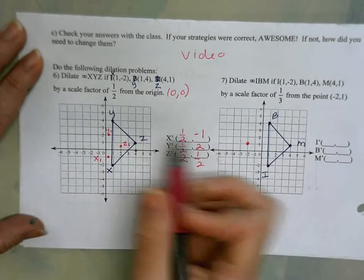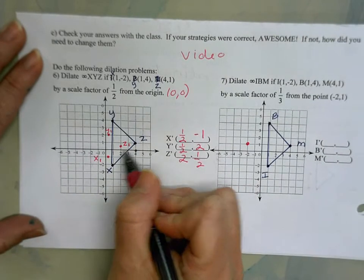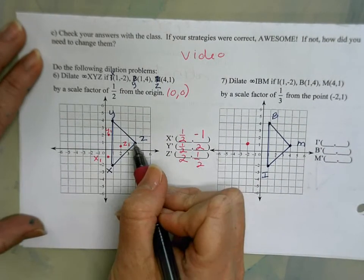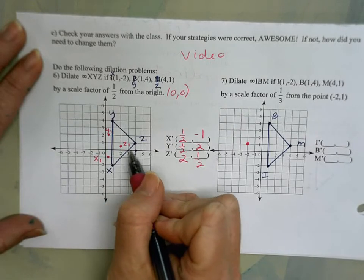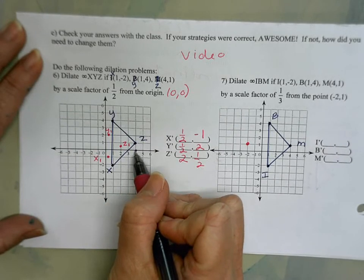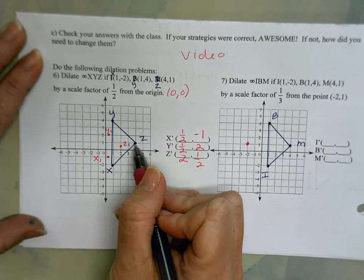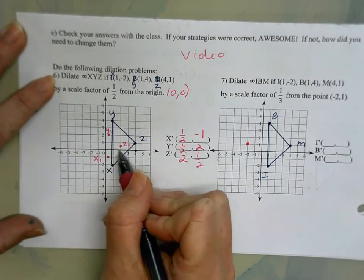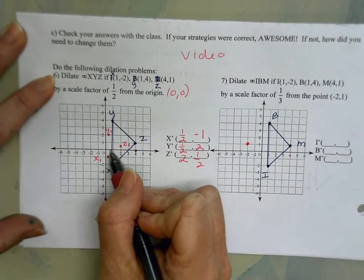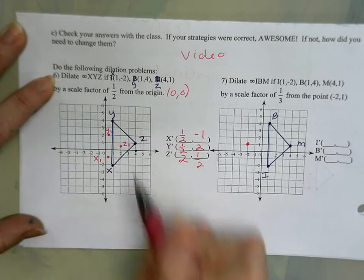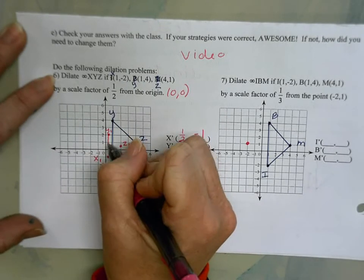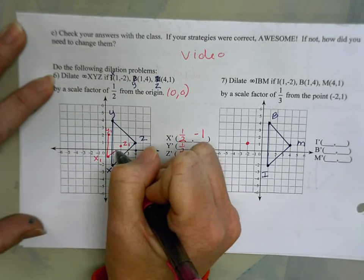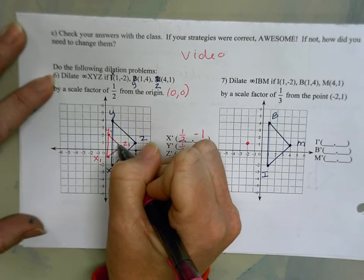so if I cut that in half I'll go over 2 and up 1/2. And then I connect and I have my dilation: similar shape, corresponding angles congruent, corresponding sides are proportional.